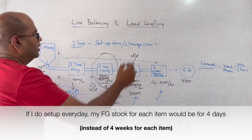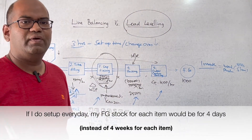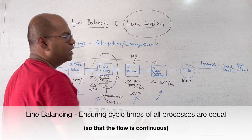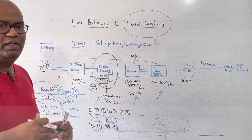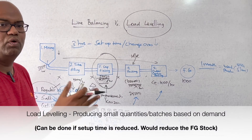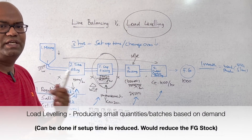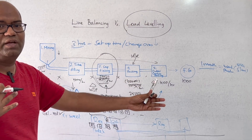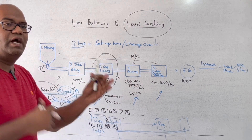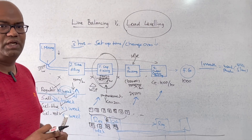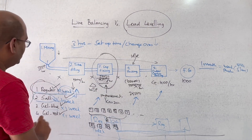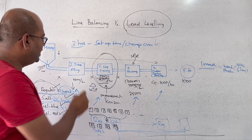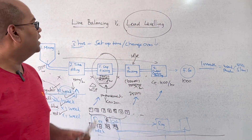That is Load Leveling. You can do a lot with load leveling — Line Balancing addresses the cycle time, while Load Leveling ensures the exact product mix is produced, doing the full changeover about 4 times across the schedule.